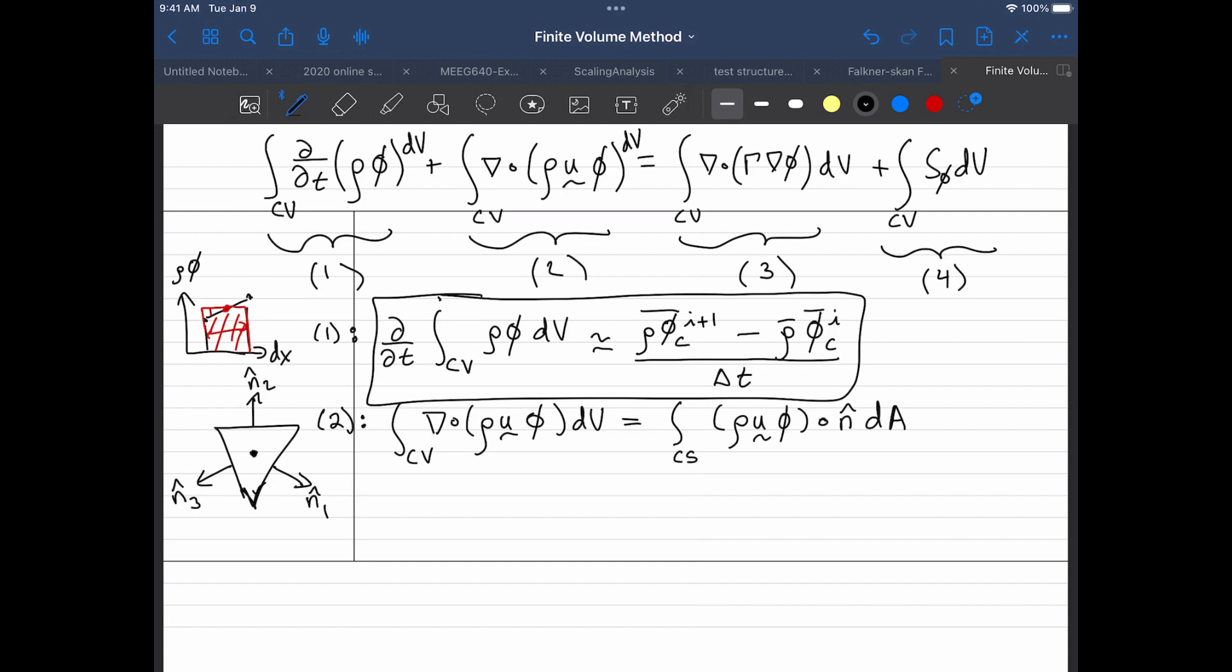So anyway, this is our control volume, and what we're going to do is instead of trying to solve a volumetric integral, we'll try to approximate the area integral. So what is this thing? This thing basically represents the amount of this scalar flowing across the interface.